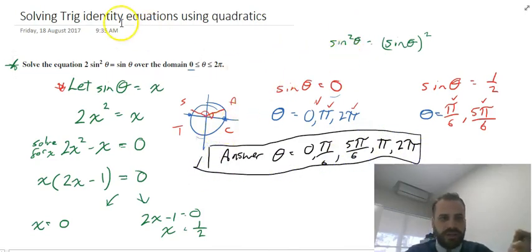All right. That's solving trig identity equations using quadratics. There is a slightly more complicated one which we're definitely going to talk about as well. But there's our general idea. Thank you.